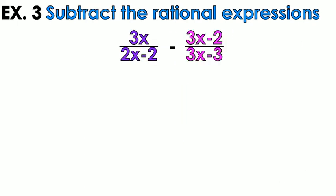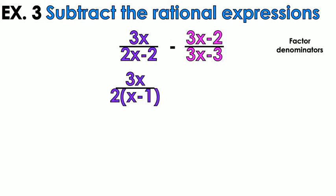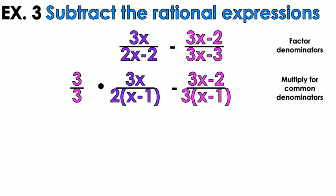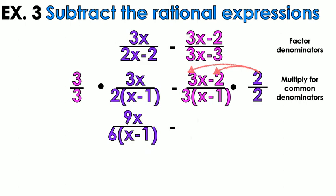Example number three — factor the denominators by taking out the GCF. Factor a GCF of 2 out of the first one and a GCF of 3 out of the second one. The purple side is missing a 3 and the pink side is missing a 2, so multiply each side by what it's missing. Distribute: 3 times 3x is 9x, 3 times 2 is 6, leave the x minus 1 alone.